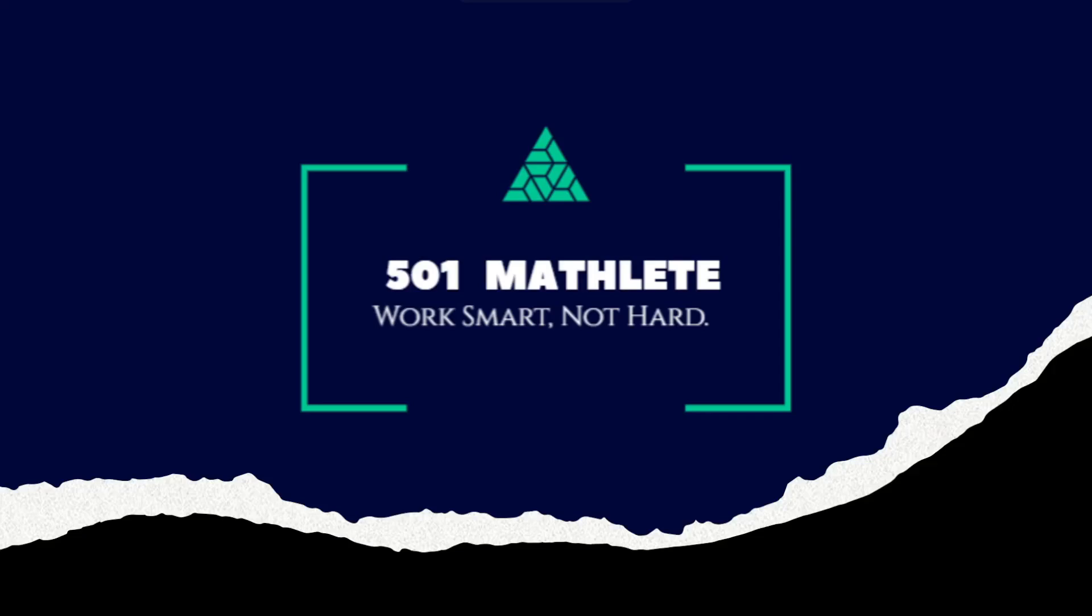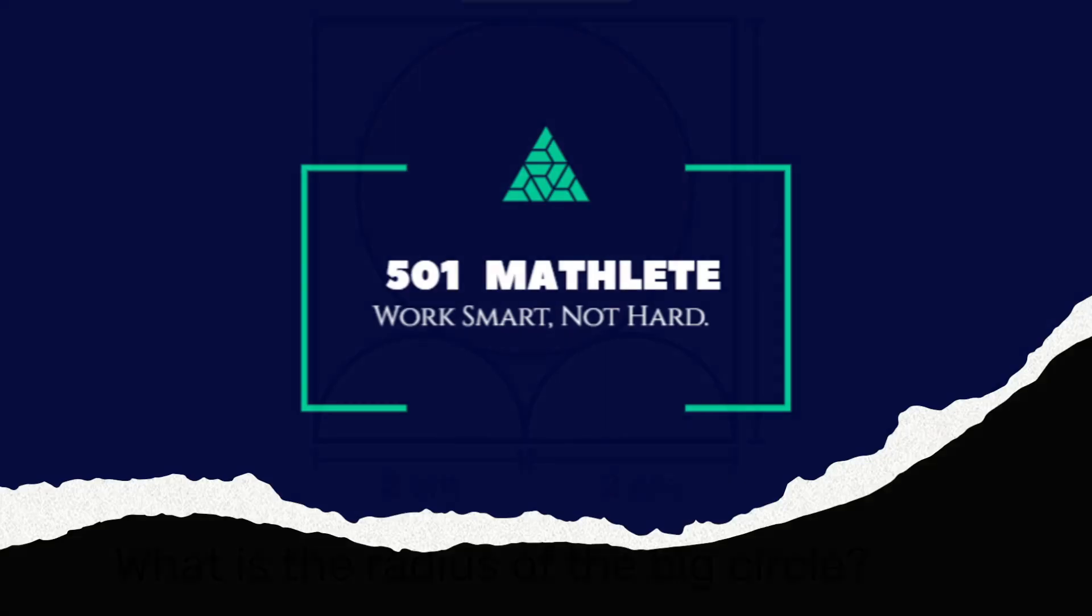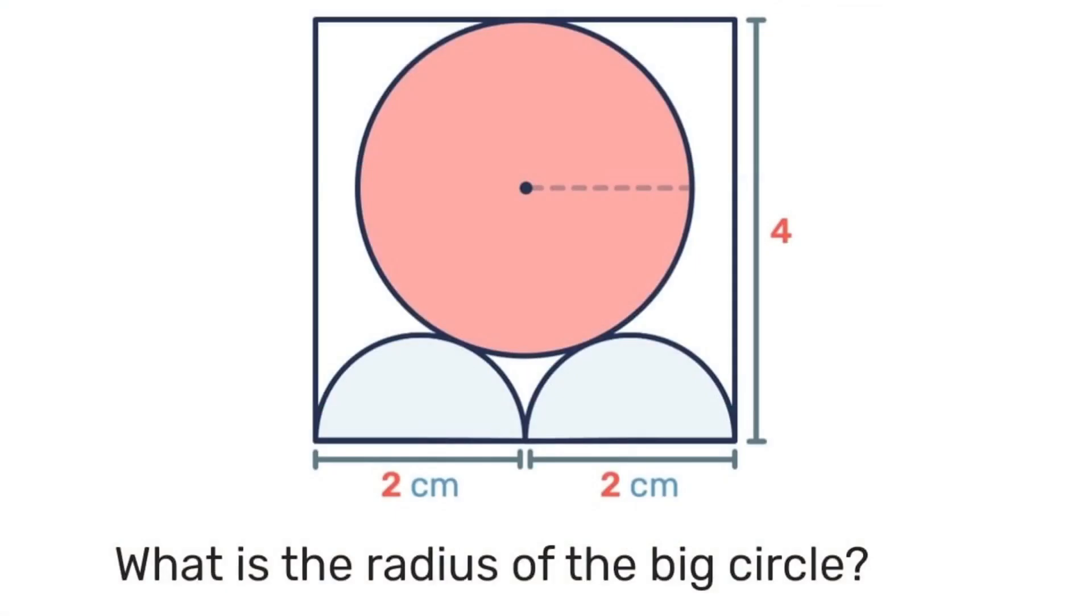Good day and welcome to 501 Matly, where we work smart, not hard. In today's problem, we're given this diagram of a square. Inside we have a large circle and two small semicircles. The square has a dimension of 4, and we're to determine the radius of the big circle.